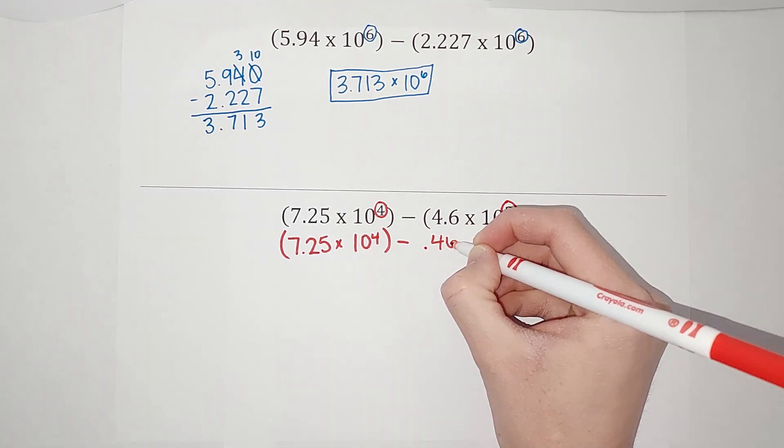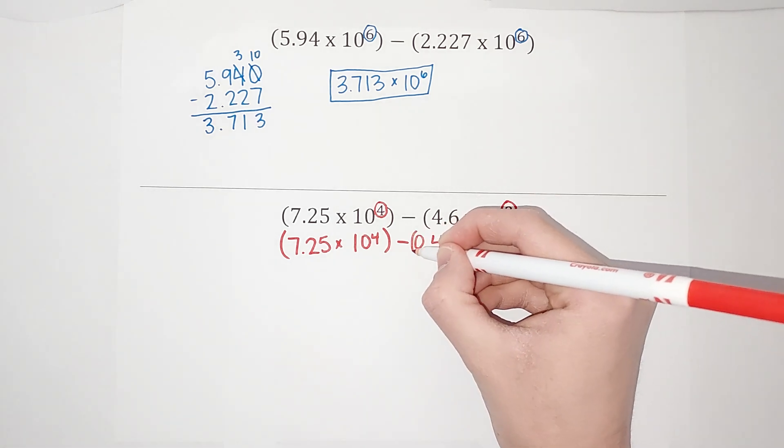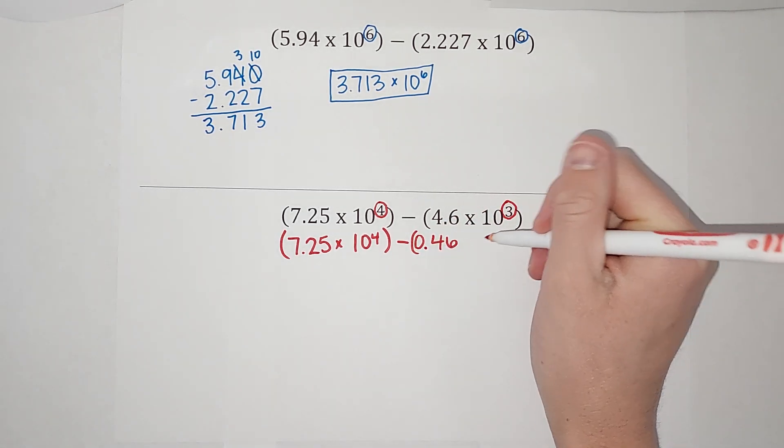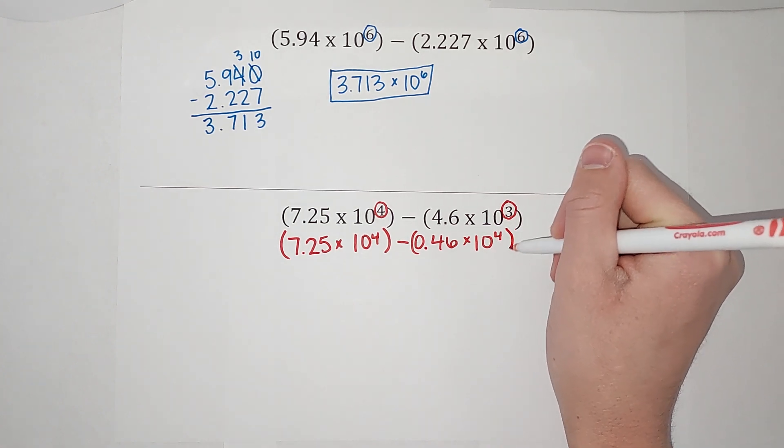So if I do 0.46, which a lot of times just to help us out, we like to put a zero in front there too. Oh, it's getting kind of cramped, sorry. Then it would be times 10 to the fourth power.